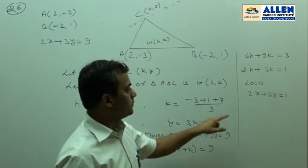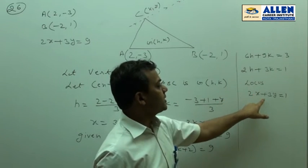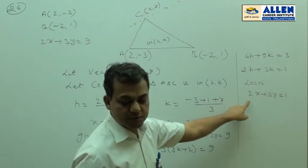Hence, locus of the centroid of the triangle is 2x plus 3y equal to 1, which is given in option 3.